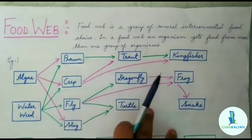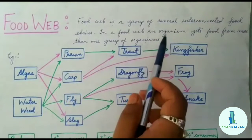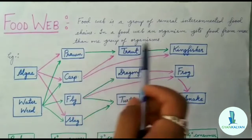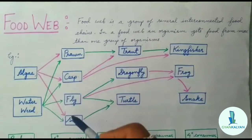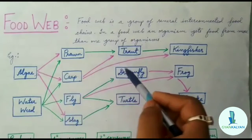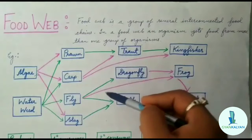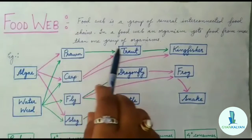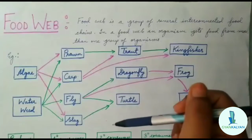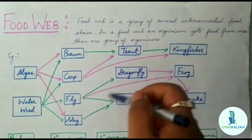For example: algae is eaten by prawn, then the prawn is eaten by trout, then the trout is eaten by kingfisher. Algae is also eaten by carp, the carp is eaten by trout, and the carp is also eaten by kingfisher. The algae is also eaten by slug, and this slug is also eaten by turtle. So algae is interconnected with almost all of these three or four food chains. Algae is not only eaten by prawn, trout, and kingfisher, but also by carp, slug, turtle, dragonfly, frog, etc. So there are interconnections between all of these food chains — hence this is a food web.